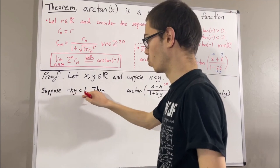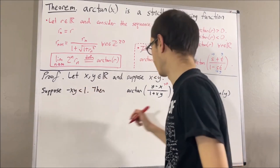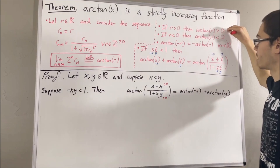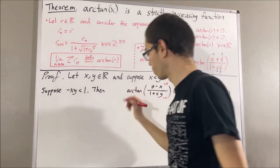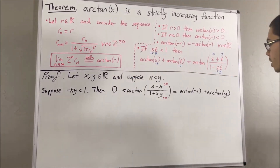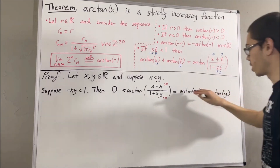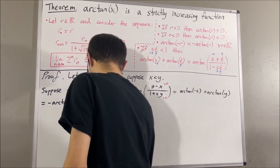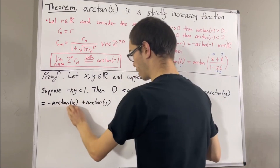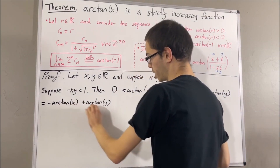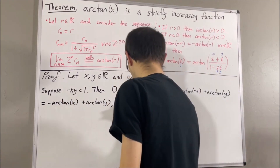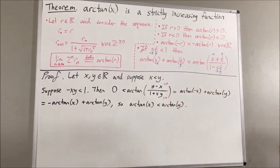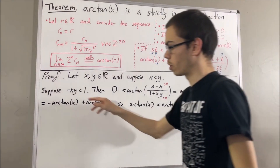Since x is less than y, certainly y minus x is bigger than 0. And since negative xy is less than 1, certainly 1 plus xy is greater than 0. So we're taking the arctangent of a positive number, which implies that the arctangent of that number is bigger than 0. Using the fact that arctangent is an odd function, arctangent of negative x equals negative arctangent of x. So we have that 0 is less than negative arctangent of x plus arctangent of y. Adding arctangent of x to the other side, arctangent of x is less than arctangent of y, which is exactly what we wanted. This completes the case where negative xy is less than 1.